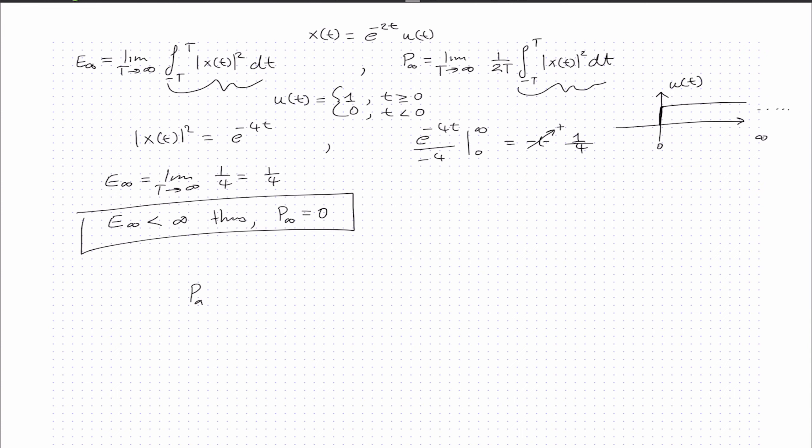For the average power equation, we have the limit as T approaches infinity of 1 over 2T times the integral. We know the energy is 1/4. When we integrate this expression, we get 1/4.